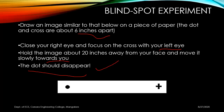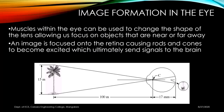Regarding image formation in the eye, muscles within the eye change the shape of the lens to allow focus on near or far objects. An image is focused onto the retina, causing rods and cones to become excited and ultimately sending signals to the brain — the eye is the sensing device and the brain is the processor. For example, a 15-meter coconut tree standing 100 meters away produces an image of about 8 mm on the retina, inverted, with a lens-to-retina distance of approximately 17 mm.